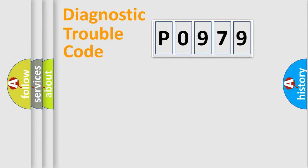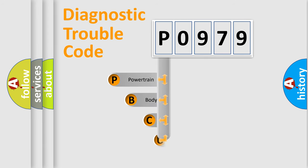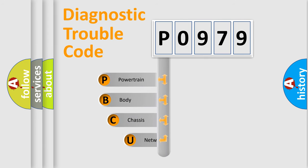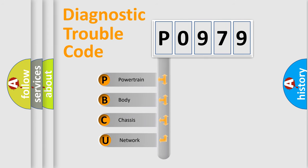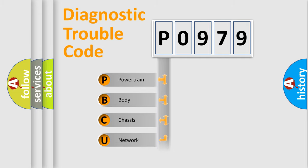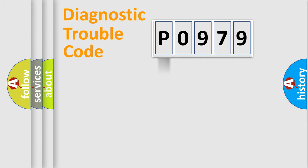First, let's look at the history of diagnostic fault code composition according to the OBD2 protocol, which is unified for all automakers since 2000. We divide the electric system of the automobile into four basic units: powertrain, body, chassis, and network.